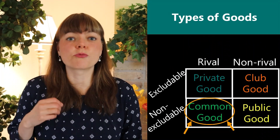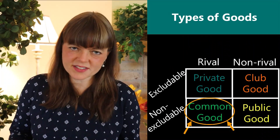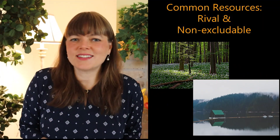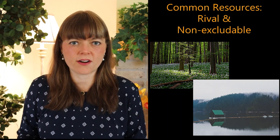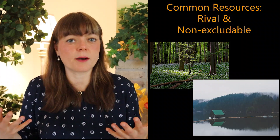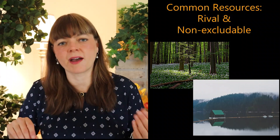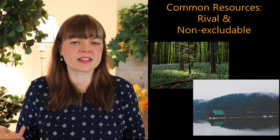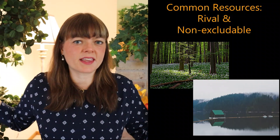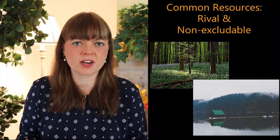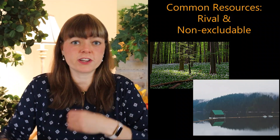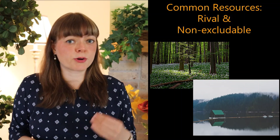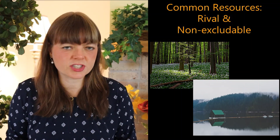Common resources are rival but non-excludable. Examples include clean water, clean air, timber, and roads. You can't exclude somebody from enjoying the clean air, but it's rival in the sense that people can use it up — like by smoking or polluting. And if you have a lake, everybody can go fish, but it is possible to fish all the fish out such that the population does not replenish the next year. So it's rival — each person using the resource diminishes it for other people.